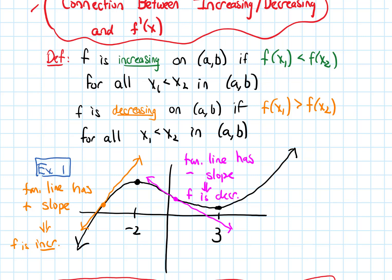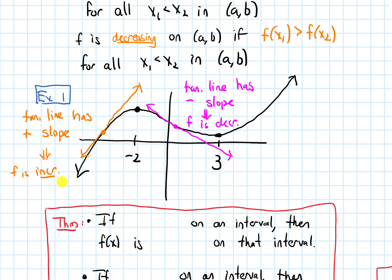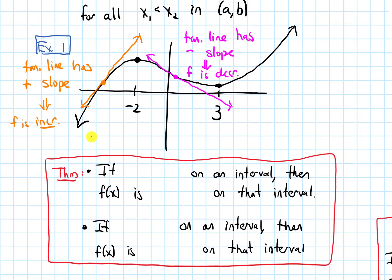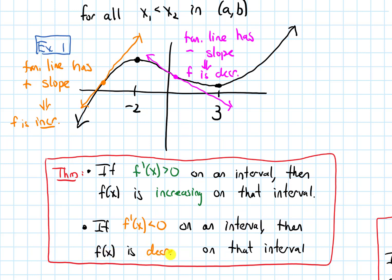That is the key connecting idea and the heart of this next theorem. If f prime of x — the derivative — is positive, greater than zero on an interval, then the original function f of x is increasing on that interval. On the flip side, if f prime of x is less than zero, if it is negative on an interval, then the original function f of x is decreasing on that interval.